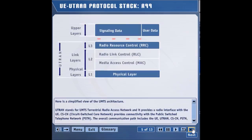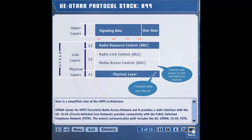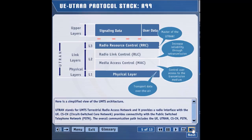Let's review the protocol stack between the UE and the UTRAN. The physical layer is responsible for carrying the information over the air. The MAC layer controls how the physical layer resources — that is, power and OVSF codes — are used. OVSF stands for orthogonal variable spreading factor. The radio link control layer increases the reliability through retransmission of lost packets. The radio resource control layer is considered to be the master of the UTRAN, since it controls how all the lower layers operate. The RRC configures the parameters of the physical, MAC, and RLC layers.